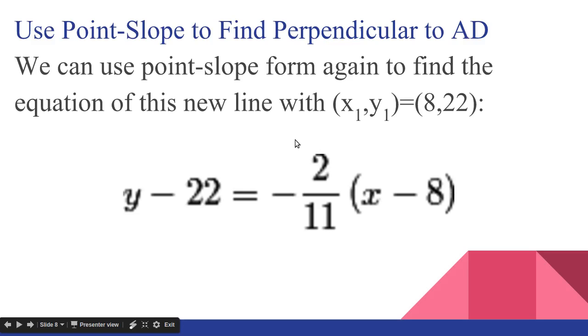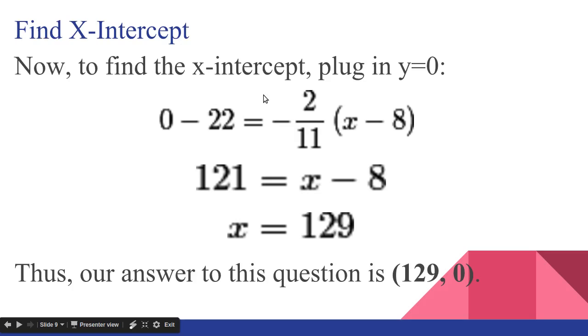And now from this we need to find the X-intercept. So we plug in Y equals 0. So 0 minus 22 equals negative 2 elevenths, X minus 8. 0 minus 22 is negative 22. Multiply both sides by negative 11 halves to cancel out the negative 2 elevenths. And we get 121 on the left side and X minus 8 on the right side. Solve for X. X equals 129. So the answer to the equation is the X-intercept is (129,0).